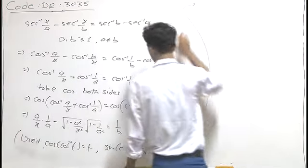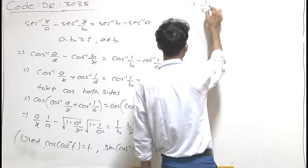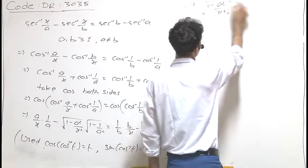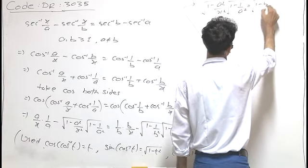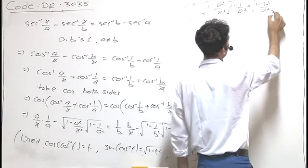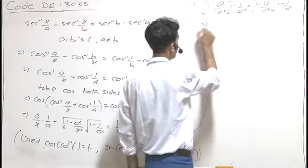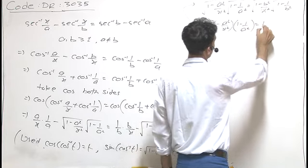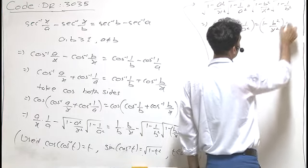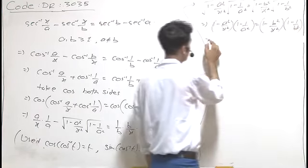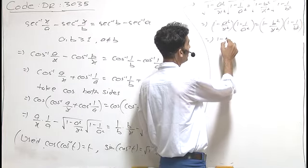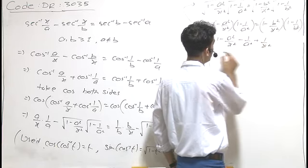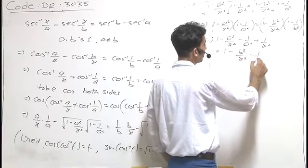Now, if we rewrite the last step, we will get 1 minus A²/x² times (1 minus 1/A²) equals 1 minus B²/x² times (1 minus 1/B²). On squaring, we can have (1 minus A²/x²)(1 minus A²) equals (1 minus B²/x²)(1 minus 1/B²). Simplifying, we get 1 minus A²/x² minus 1/A² plus 1/x² equated with 1 minus B²/x² minus 1/B² plus 1/x².